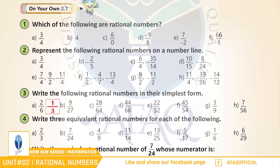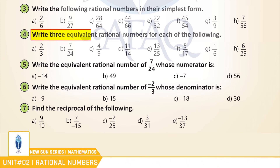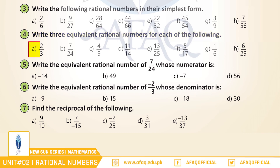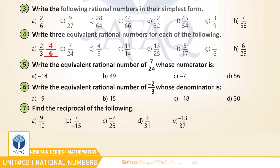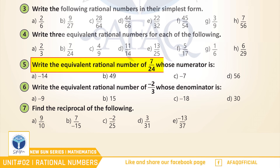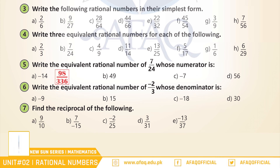اسی طرح سے اگلے پارٹس آپ نے خود حل کرنے ہیں. Question number 4: Write 3 equivalent rational numbers for each of the following. Part A. اسی طرح سے اگلے پارٹس آپ نے خود حل کرنے ہیں. Question number 5: Write the equivalent rational number of 7 by 24 whose numerator is A: minus 14. Good. It is 98 by 336.